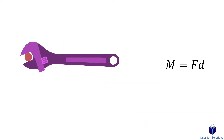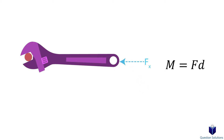Now let's say we apply a force at an angle. In this case, we can break this force into X and Y components. The only component that does work in this example would be the Y component, since the X component's line of action intersects the Z axis.